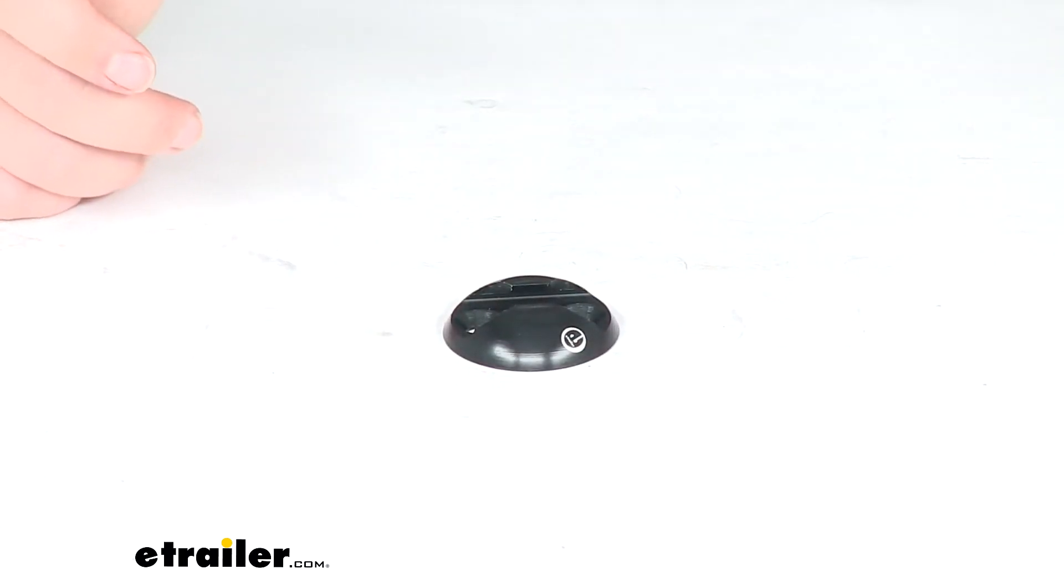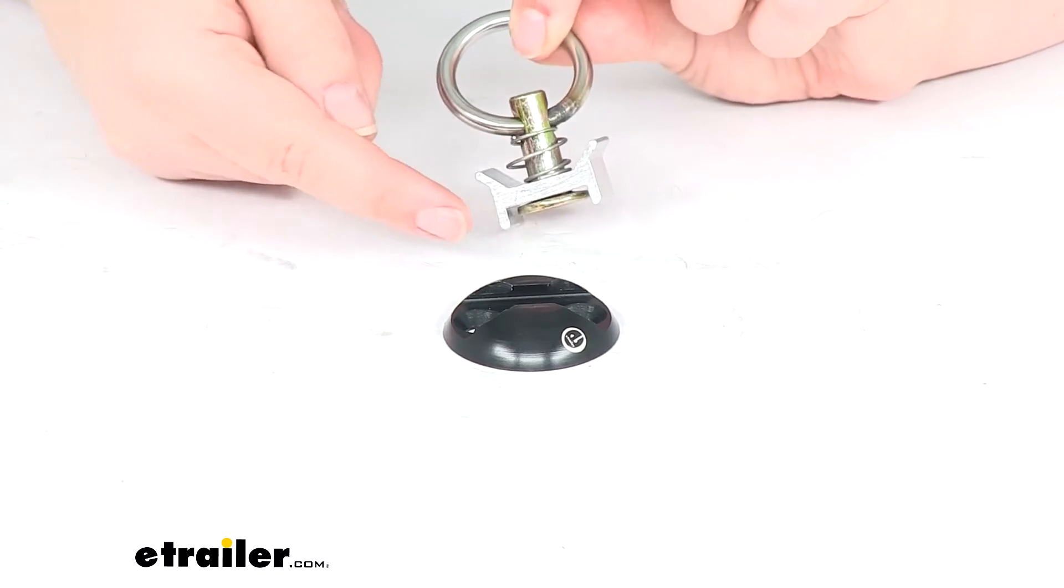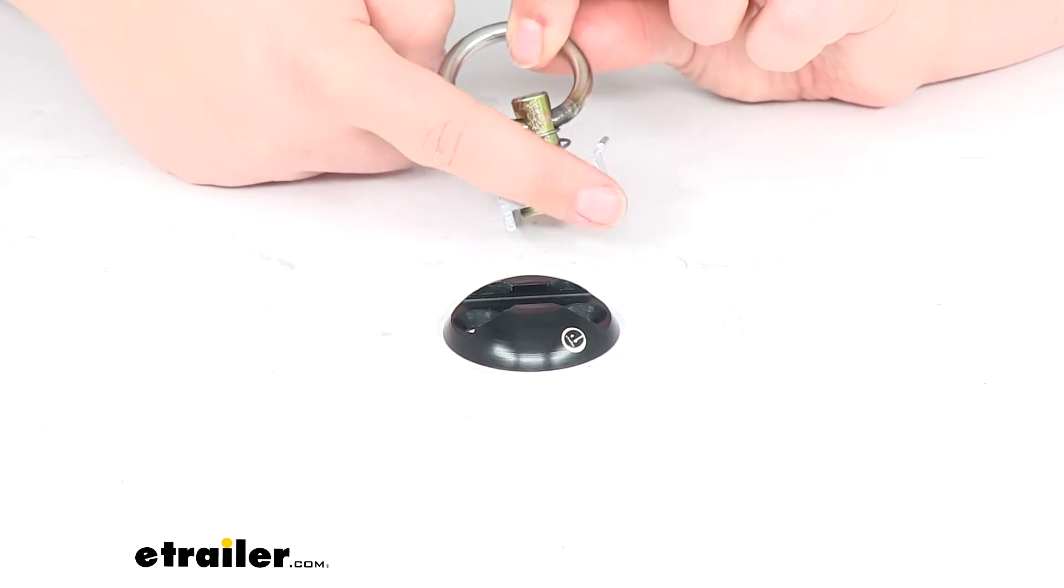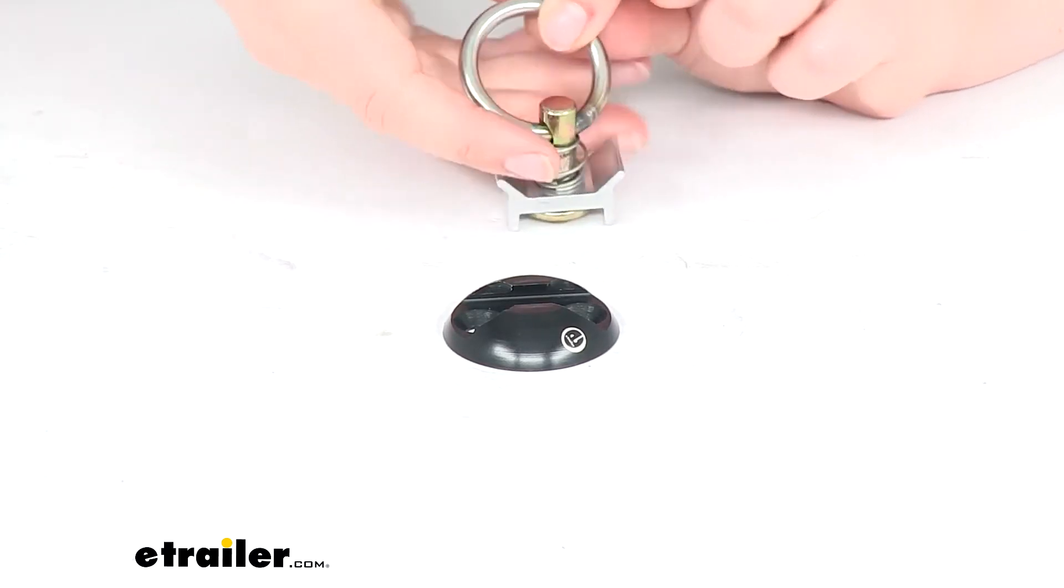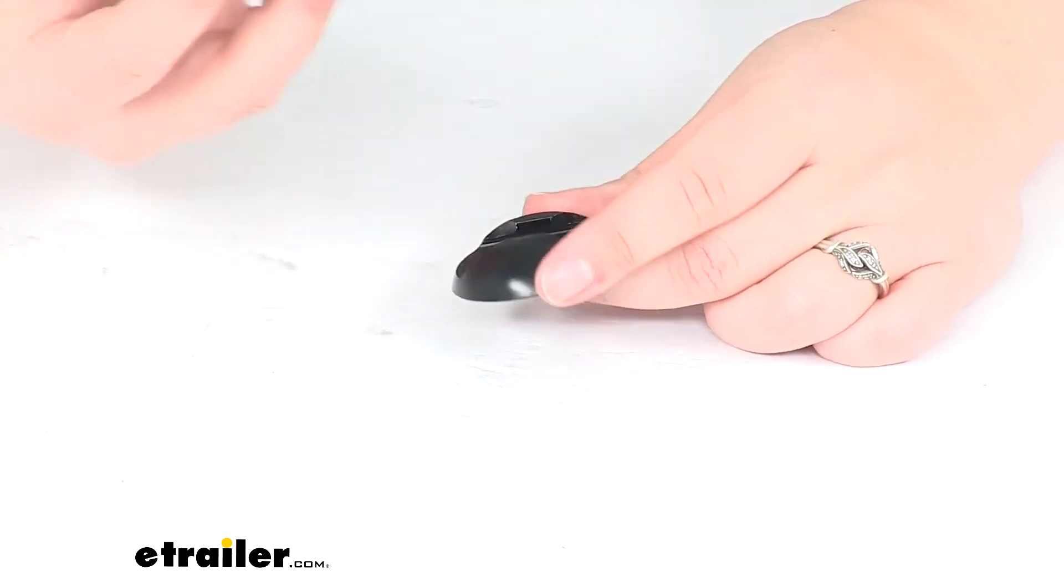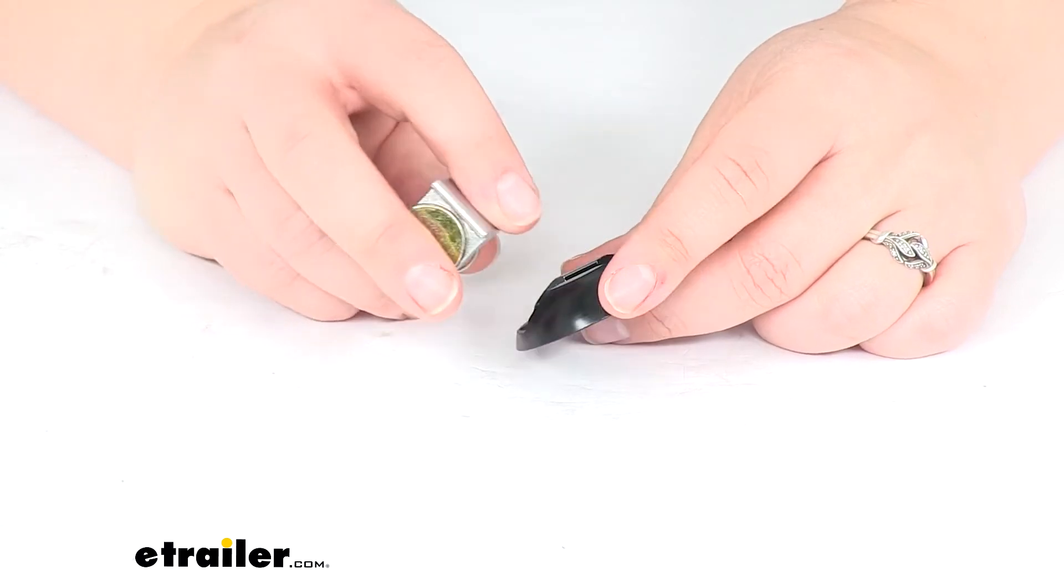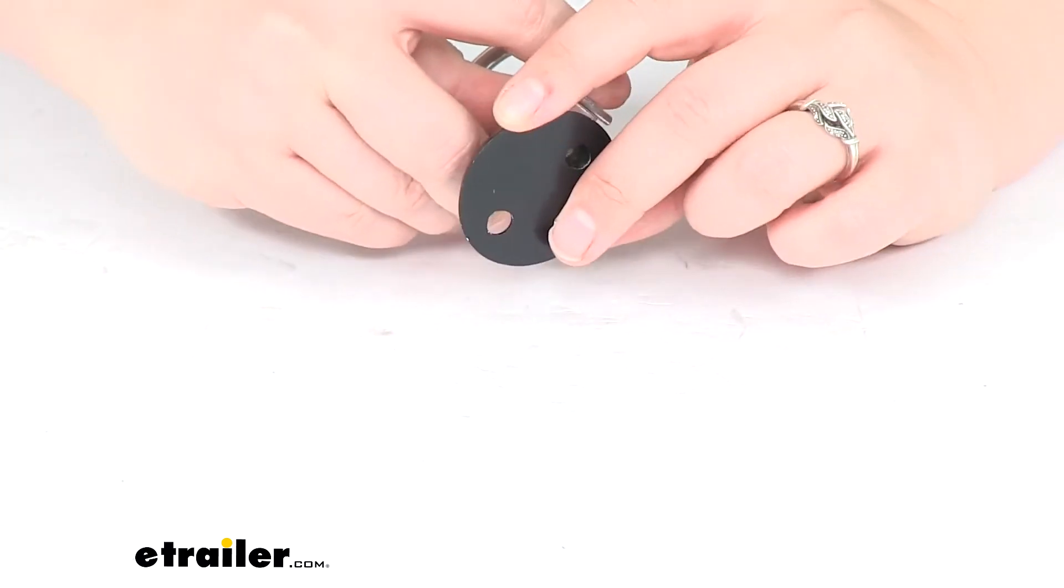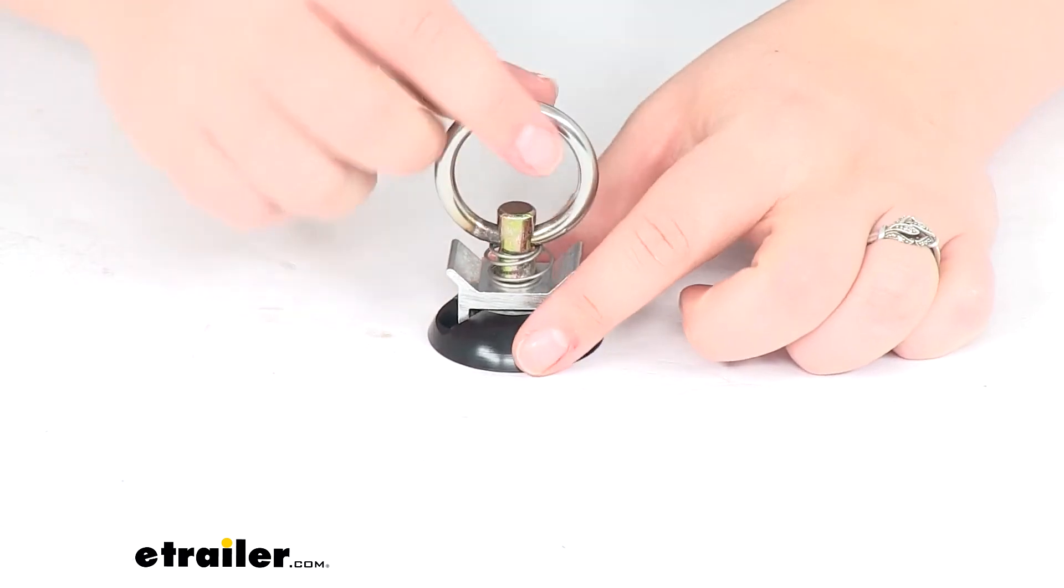Now, the best attachment for this is one that has a little C shape there to capture in against where this holds in. There are a lot of attachment points for L-Track, but this is probably the best one out there as far as the design goes.